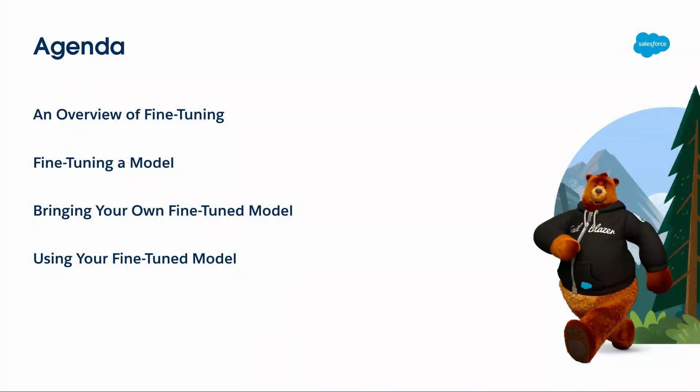So this is what I'm going to talk about today: first, an overview of fine-tuning — what it is, how you fine-tune a model. Once you've fine-tuned it, how you bring it into Salesforce — bringing your own model — and then how you use that fine-tuned model, how you configure that into AgentForce. You'll see references to Copilot rather than AgentForce because I'd already submitted all this before the names changed. Mentally, anything that says Copilot, change it to AgentForce.